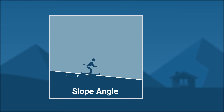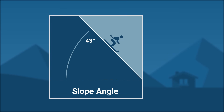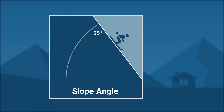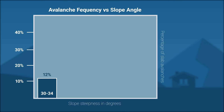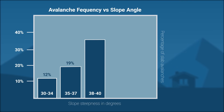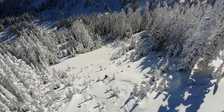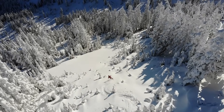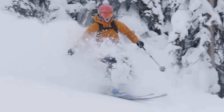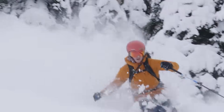Steepness is one of the most definitive factors in determining whether a slope will slide or not. Slopes between 35 and 45 degrees are where most human-triggered avalanches occur. As simple as it would be to just avoid this terrain, this also happens to be the most fun stuff to ski. Just think of your standard Black Diamond ski run — this is commonly the perfect angle for an avalanche to occur.